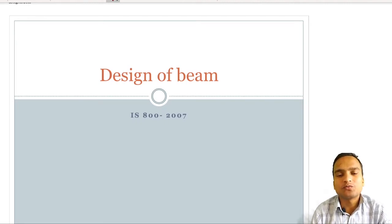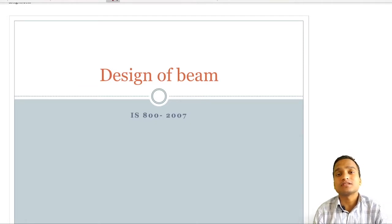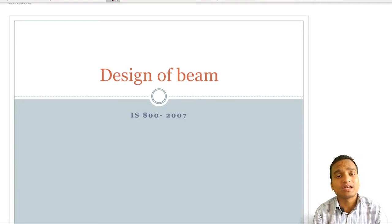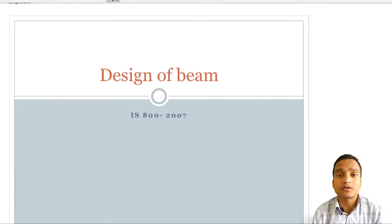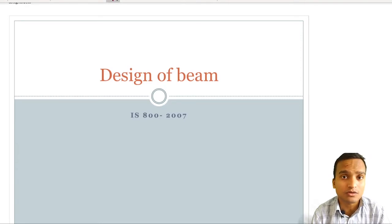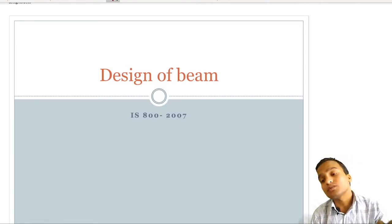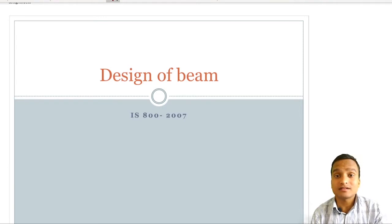Hello and welcome everyone. Now we are going to see the design of beams in steel structures. You must have seen the design of singly reinforced beams, doubly reinforced beams, and L and T shape beams in RCC. Here the design of steel beams will be done with the help of IS800. I recommend you keep the IS800 book as well as the steel table handbook with you so that you can note down the properties of sections and understand the formulas we are going to apply.